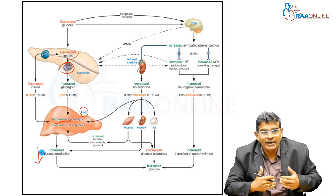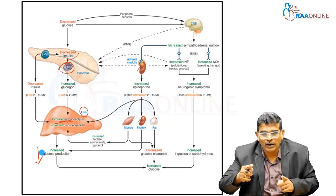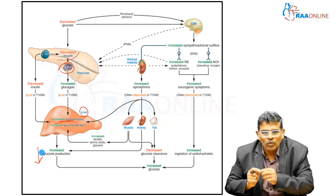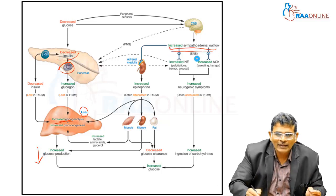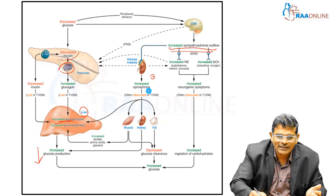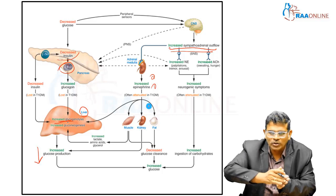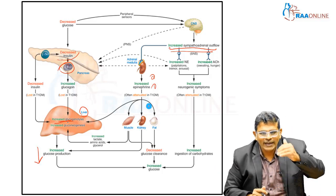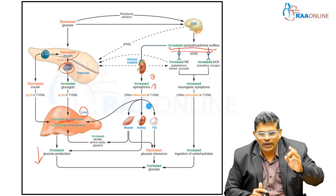When decreased sugar is sensed, the signal goes to the brain, which is able to detect the fall in glucose. As a counter-response, there is increased sympathoadrenal flow. Through this increased sympathoadrenal flow, the adrenal medulla also senses the low sugar, resulting in increased epinephrine secretion. The low sugar stimulus goes to the CNS, causing increased epinephrine and increased norepinephrine.